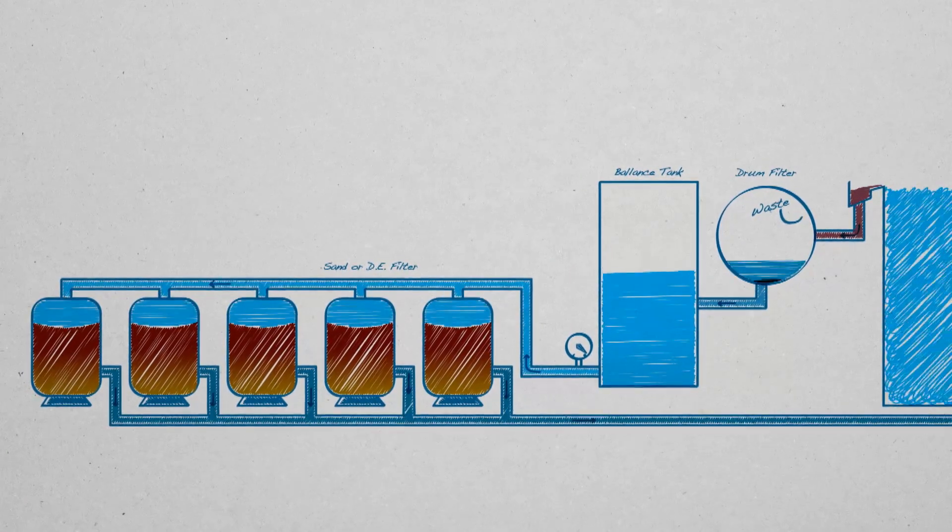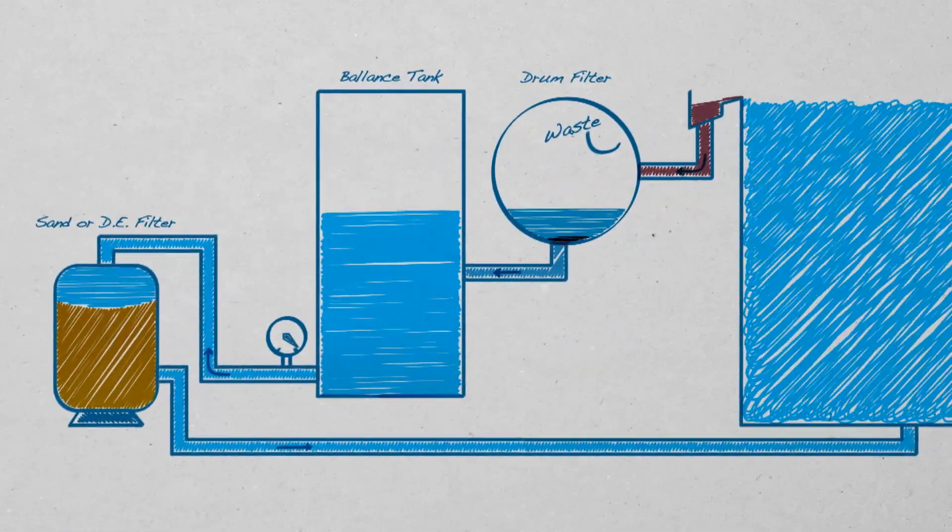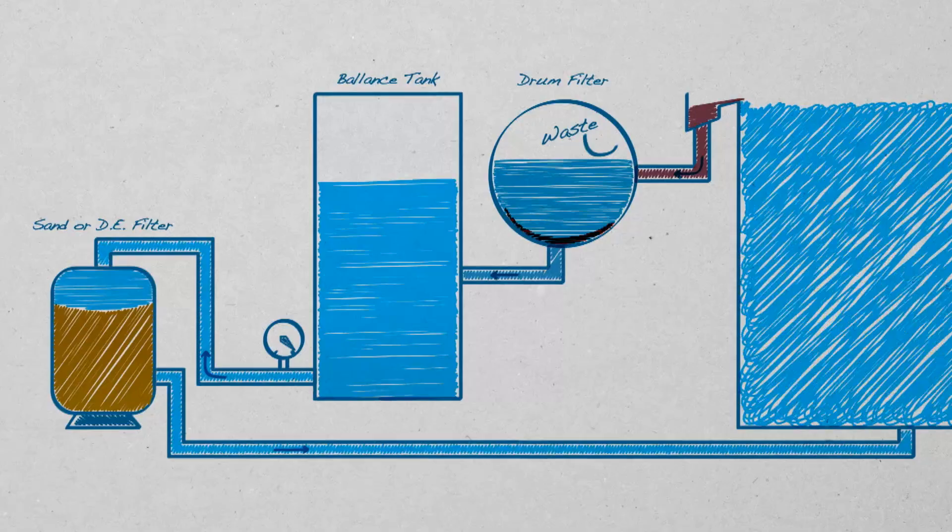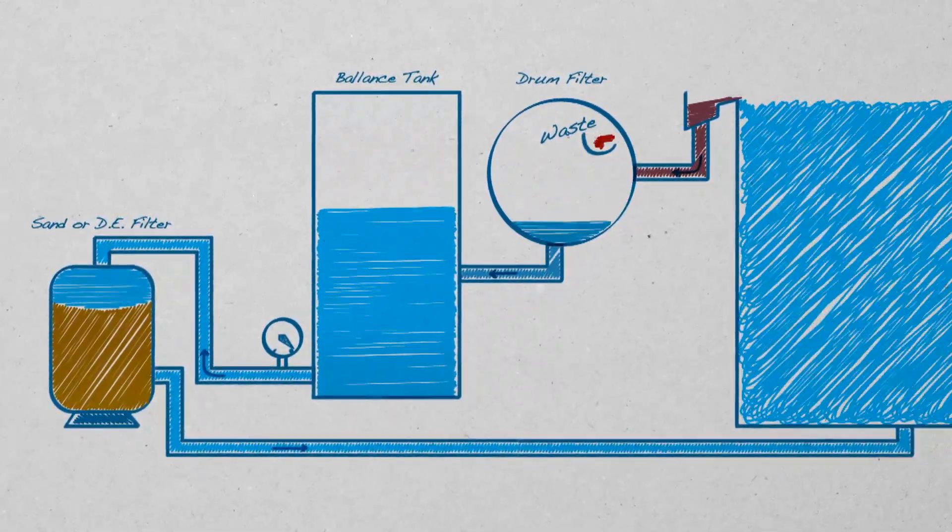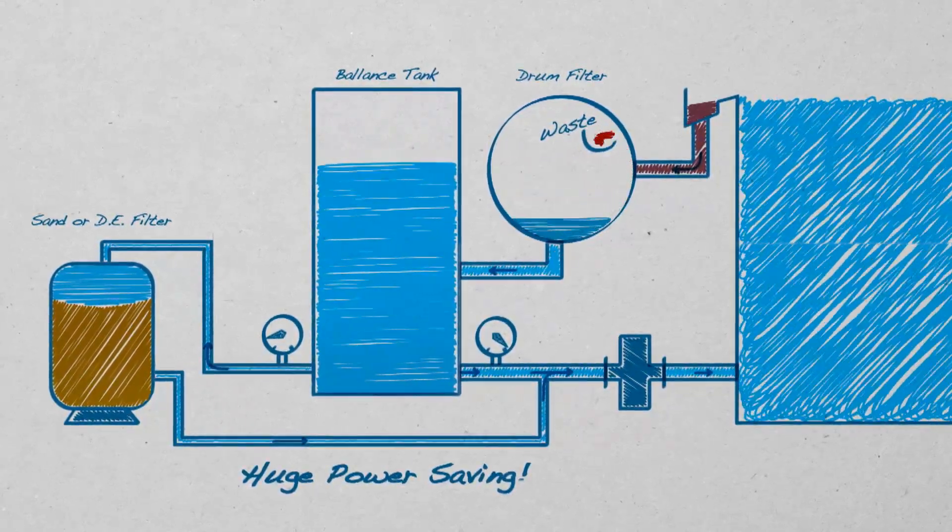Because the drum filter becomes the primary means of mechanical filtration, the amount of sand or DE filters can be drastically reduced and most of the water can be pumped back into the pool without passing further filtration, saving you pumping energy and backwash water.